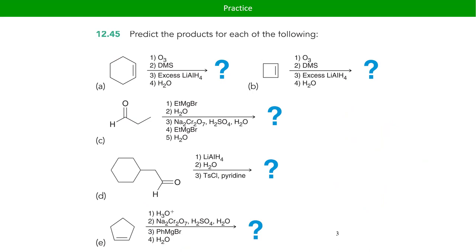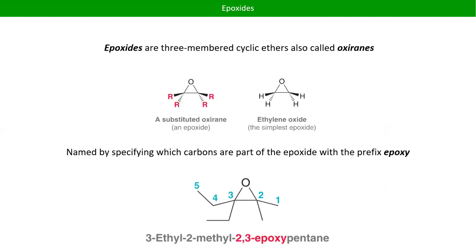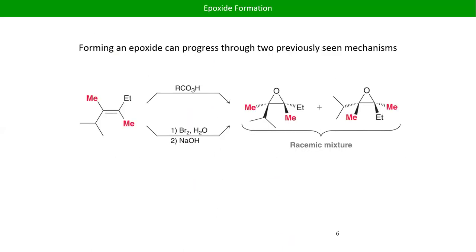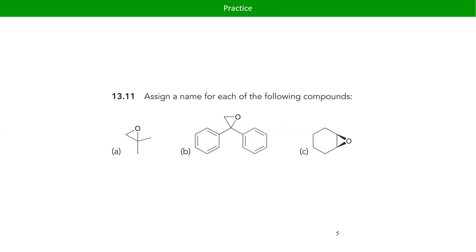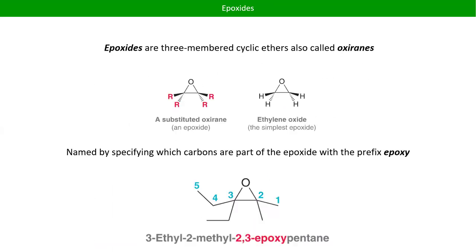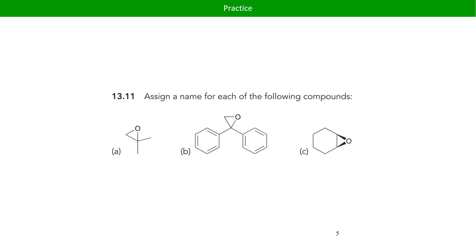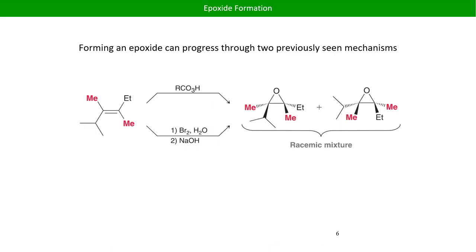That's a bit of review — just practicing some of these oxidations and reductions we've seen in the alcohol chapter. We'll do a couple more slides until we get to the slide on Sharpless, because that's where things start getting really weird. The one concept we'll add here is just the idea of naming epoxides.